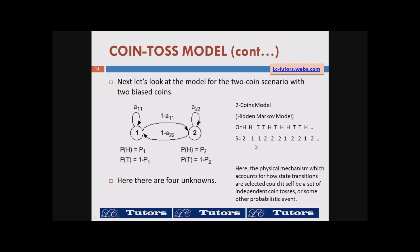Whatever you have here is a hidden Markov model — by looking at the observation you cannot tell the state; it can be either coin one or coin two. That's why head can correspond to state one or state two, and the same thing applies for tail.